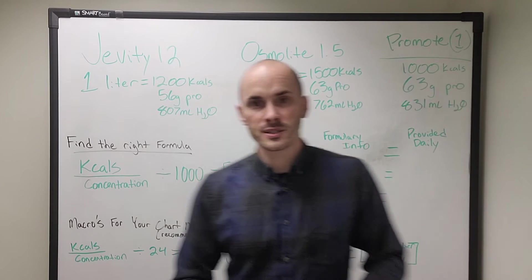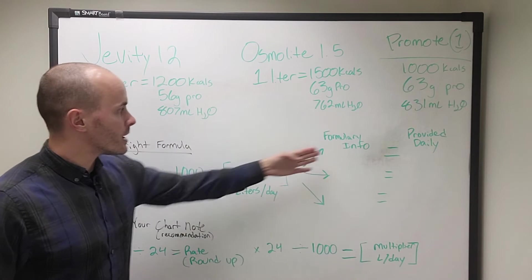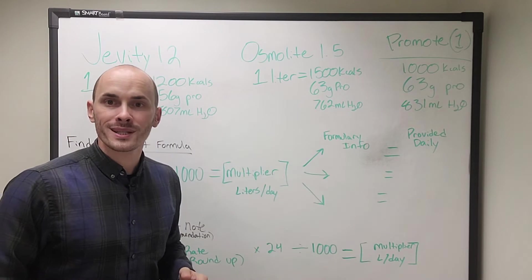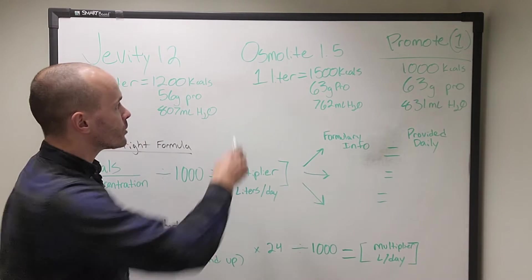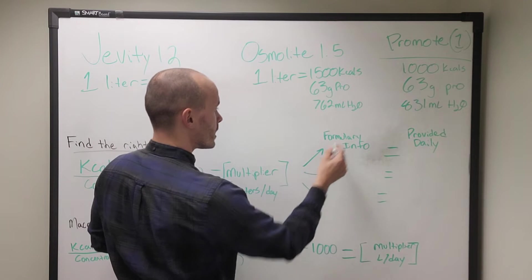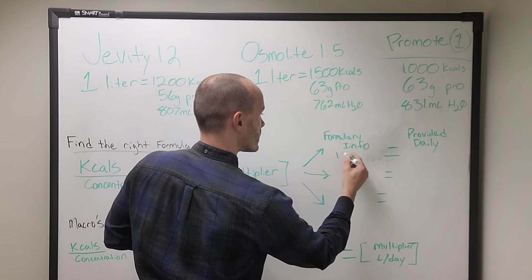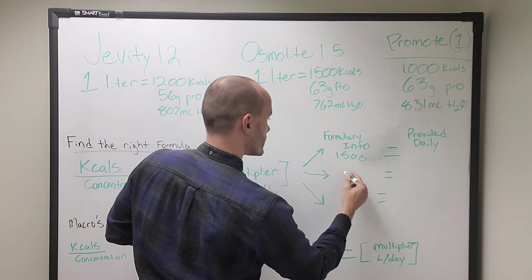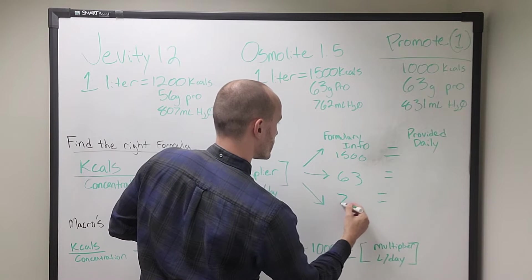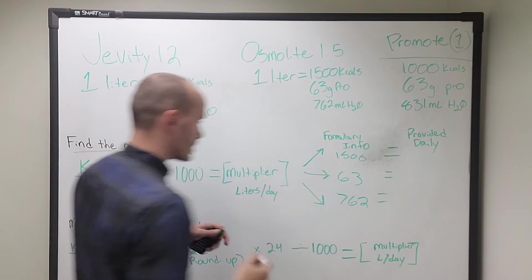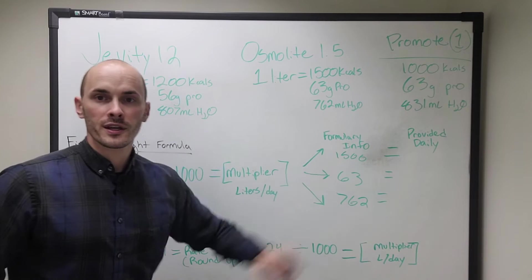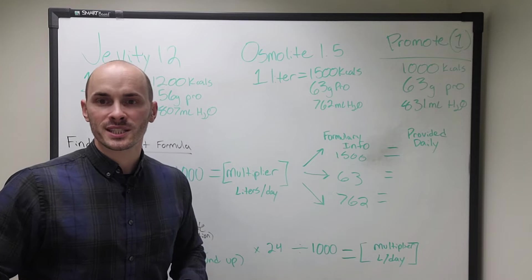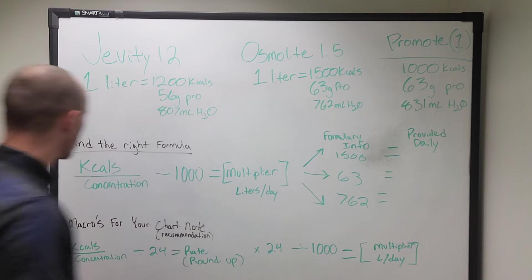So by multiplying this, you use the multiplier. We use the multiplier and we plug it into our formula information. So let's say here we're using osmolite 1.5. We can just type in here the formulary info, 1563 and 762. So whatever your multiplier is, you just run the numbers through.